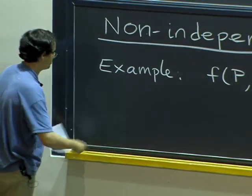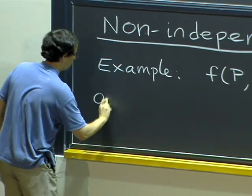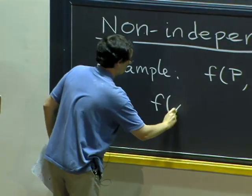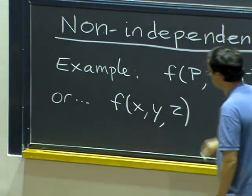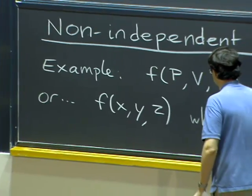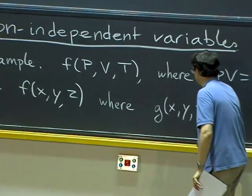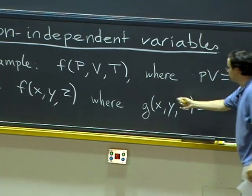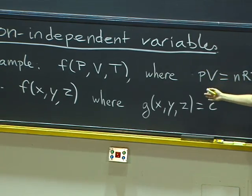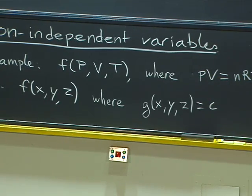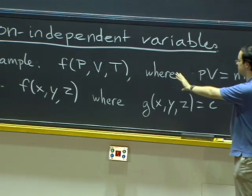Let's say just for the sake of notation, I am going to think of a function of three variables x, y, z, where the variables are related by some equation that I will put in the form g of x, y, z equals some constant. That is the same kind of setup as we had last time, except now we are not just looking for minima and maxima. We are trying to understand partial derivatives.